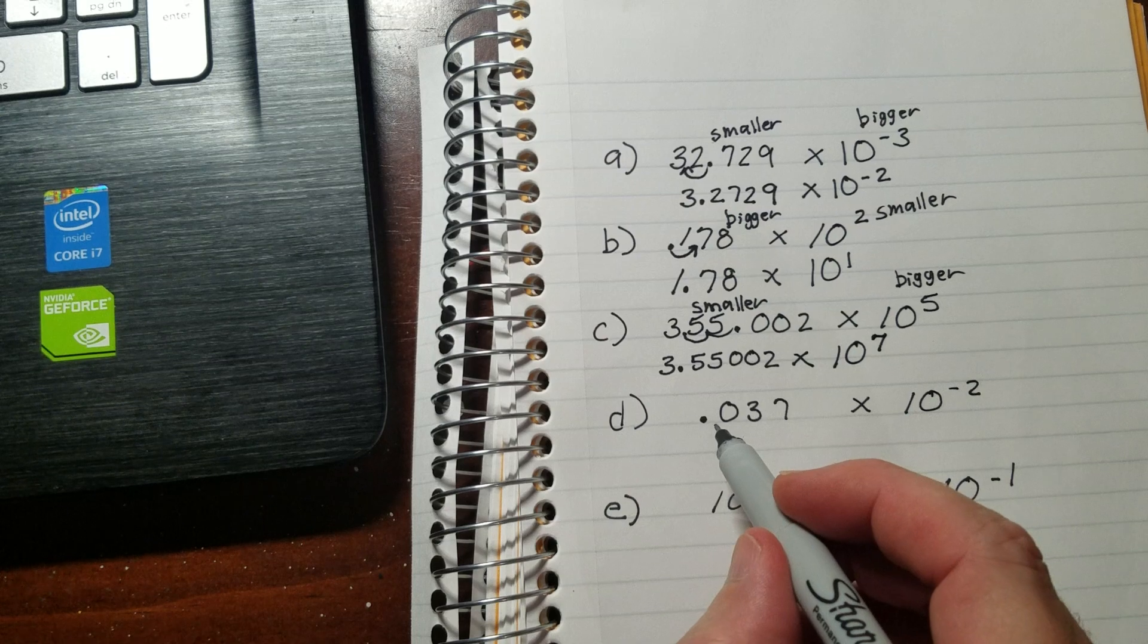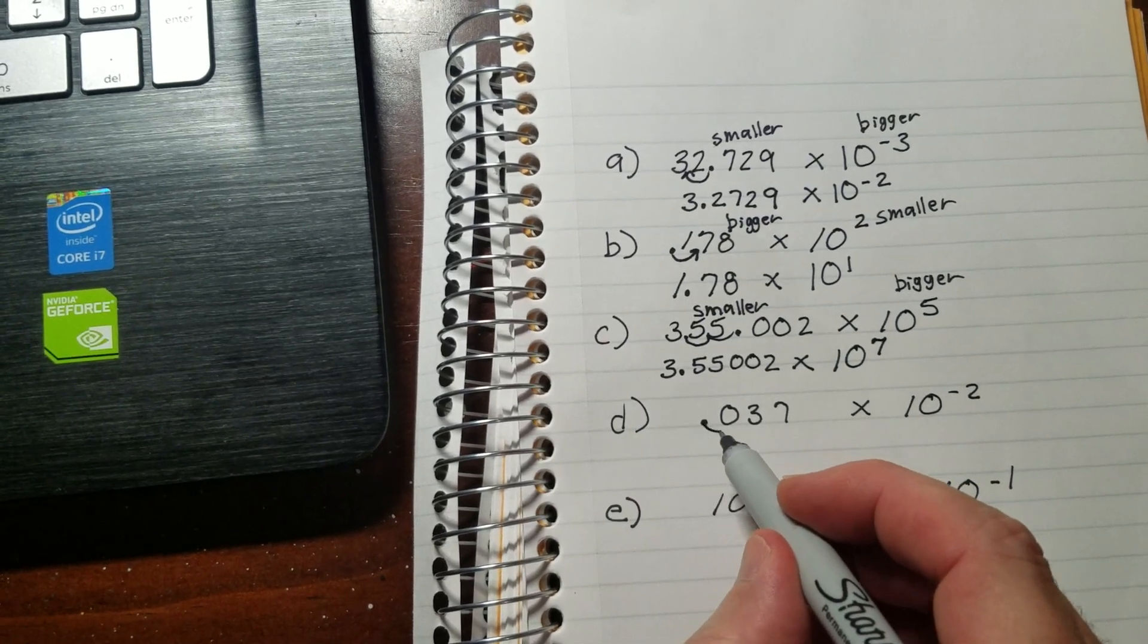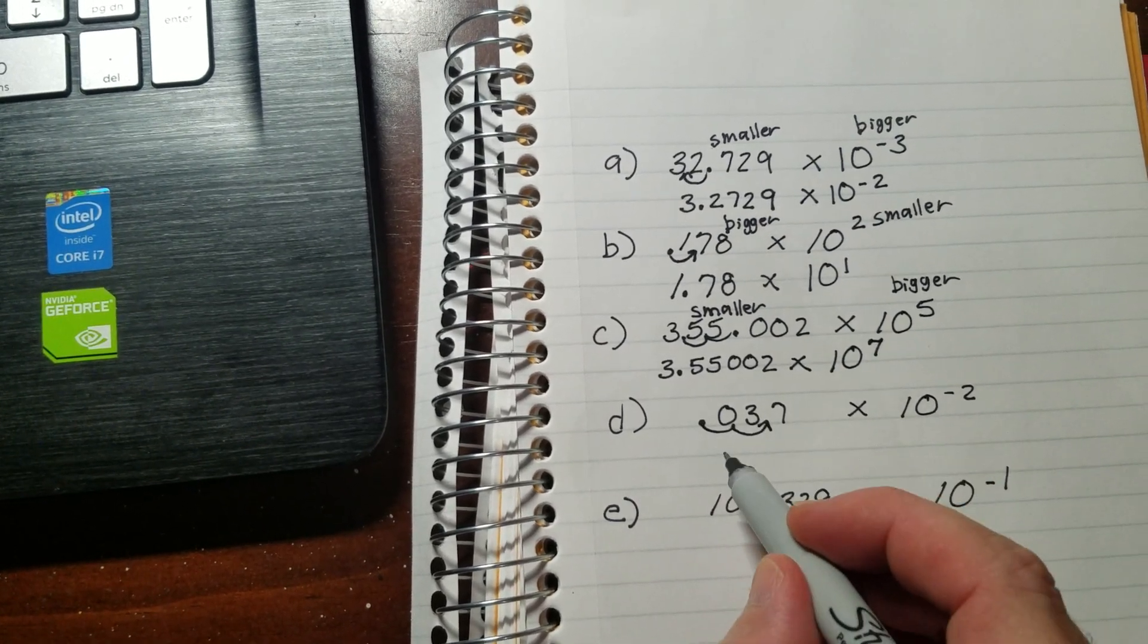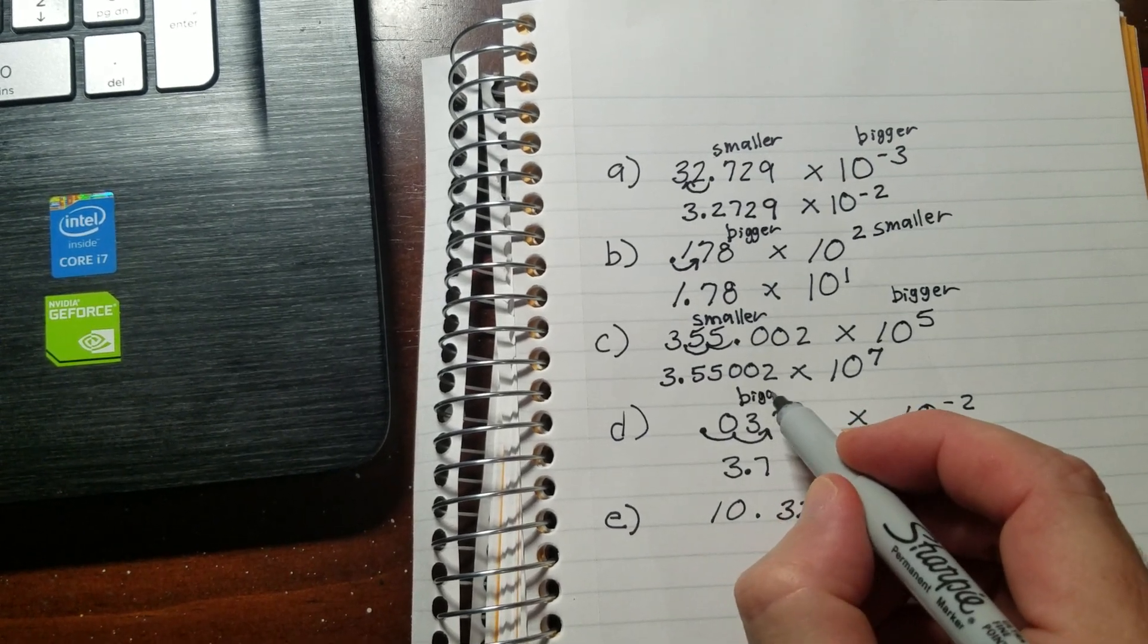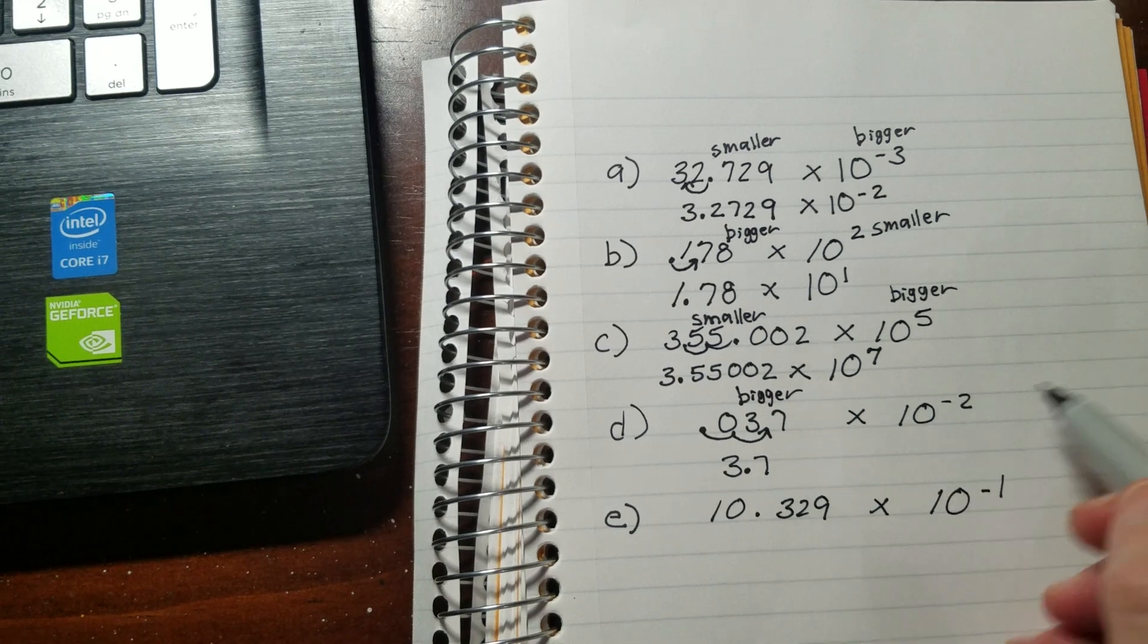This one over here, I've got to make this a little bit bigger. Again, I've got to go 1, 2 to make this into a 3.7. So this became bigger. And this is going to have to become smaller.